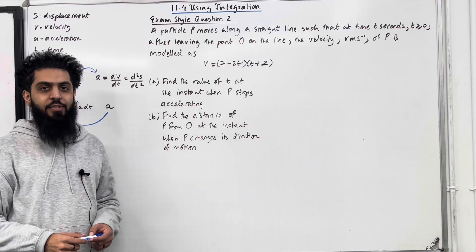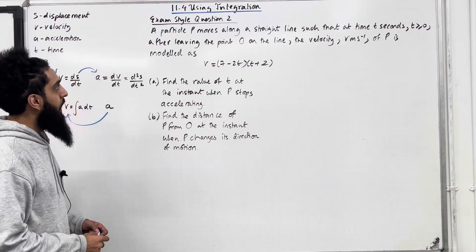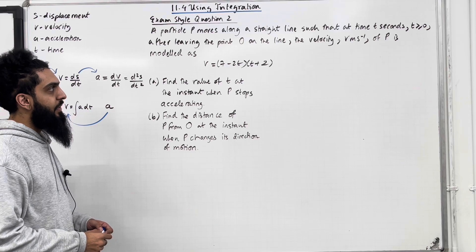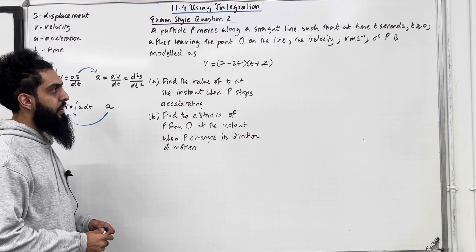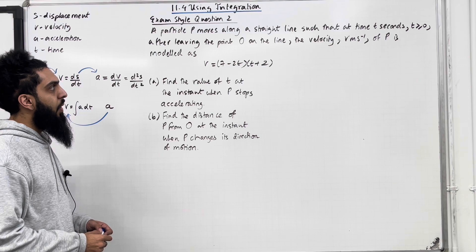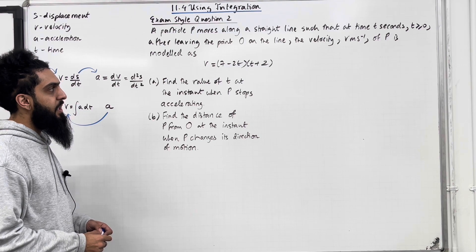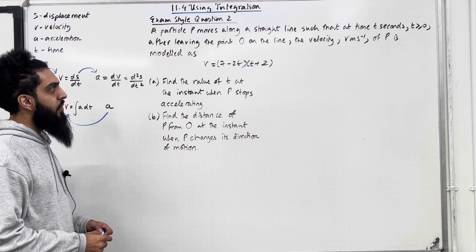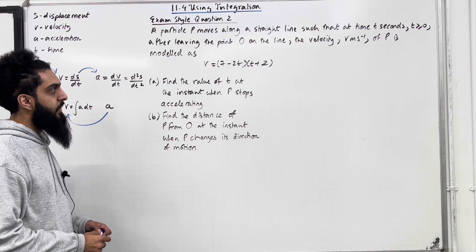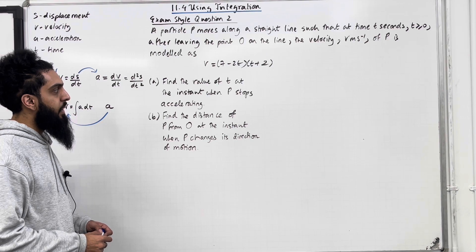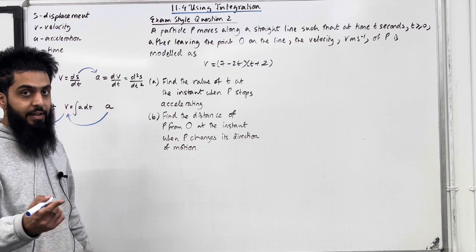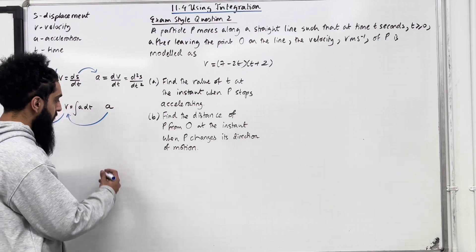That completes exam-style question 1. Let's have a look at exam-style question 2. A particle P moves along a straight line such that time T seconds (T ≥ 0) after leaving the point O on the line, the velocity V m/s of P is modelled as V = (7 − 2T)(T + 2). Part A: find the value of T at the instant when P stops accelerating.